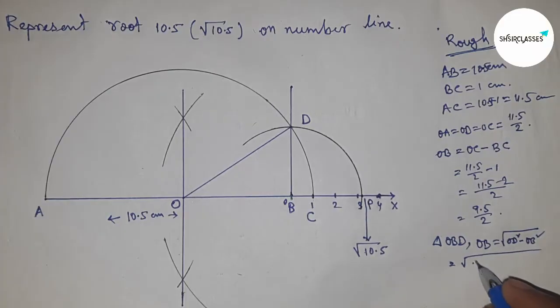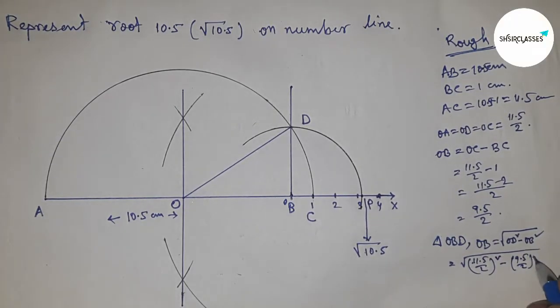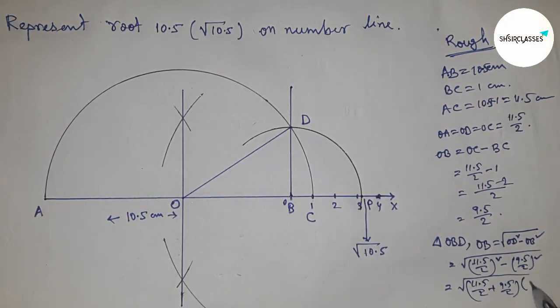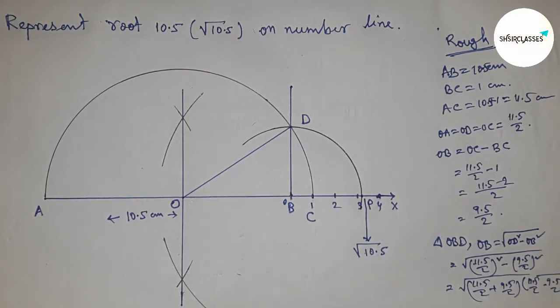So hypotenuse 11.5 by 2 whole squared minus 9.5 by 2 whole squared. Next, apply the formula a squared minus b squared equals a plus b times a minus b.